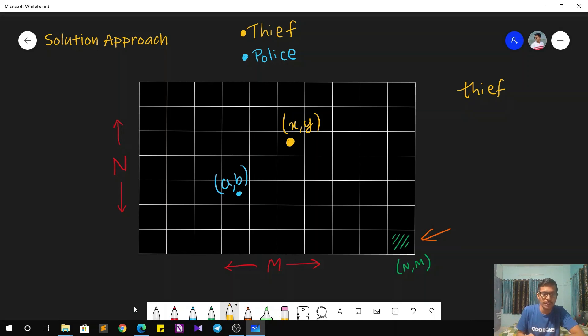For the thief, we already know that the time is just N minus X plus M minus Y, because this is the number of moves the thief is going to make. Similarly, the police has three types of moves: he can either go right, down, or right plus down, in a diagonal manner. What we do is first calculate that in total, how many right and down moves does the police have to make. Like the thief, the police also has to make N minus A down moves and M minus B right moves.